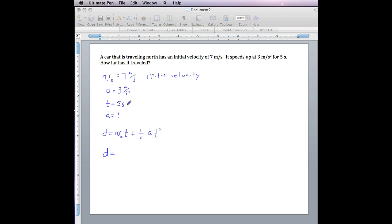That's a good idea in problems, so be sure to plug in the right thing in the right place. So we plug in the v naught, which is 7 meters per second. The t, which is 5 seconds. The a, which is 3 meters per second squared.